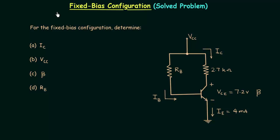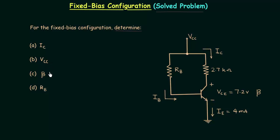In the previous presentation I explained fixed bias configuration of a transistor. In this lecture I will solve one numerical problem based on fixed bias configuration. The problem asks us to determine IC the collector current, VCC the biasing potential, beta the amplification factor, and RB the resistance connected in series with the base.